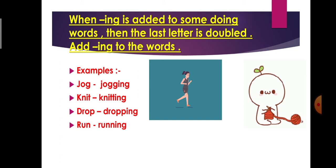Next is, k-n-i-t knit. Iska kya ban jayega? Knitting. K-n-i-double-t-i-n-g. Yaha par hum ne 't' ko repeat kiya hai. 'T' ko double kiya hai. Next word is drop. D-r-o-p. At the time of adding -ing to this word, we will repeat last letter. And what is the last letter? Last letter is 'p'. So, it will become dropping. D-r-o-double-p-i-n-g. Dropping. Next is run. R-u-n. And now, at the time of adding -ing, we will double this 'n'. R-u-double-n-i-n-g. It will become running.